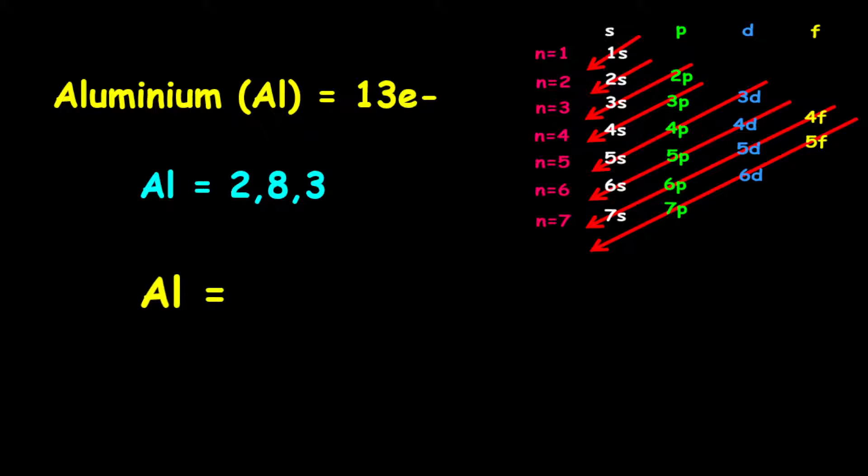For the orbital filling electron configuration, it is given as 1s2, followed by 2s2, then 2p6, followed by 3s2, then 3p1.